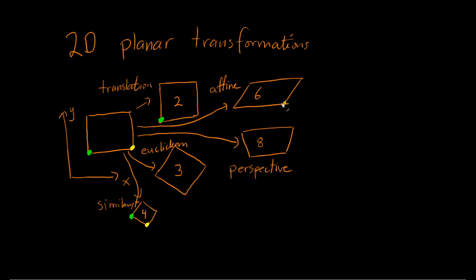For the affine transformation, the story is more or less the same, but instead of using two points we need to use three points. We need to specify where three corners of this square end up in the transformed coordinate system. And you might be able to guess the structure for the perspective transformation — in that case we need eight degrees of freedom, meaning we need four point correspondences to make this work out properly.